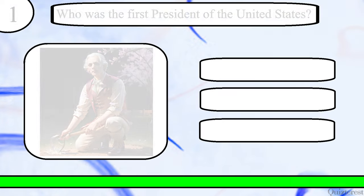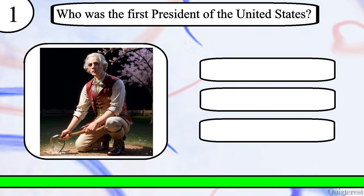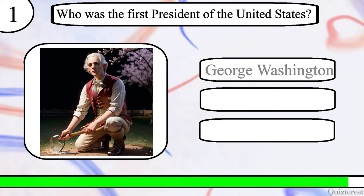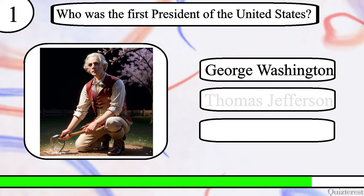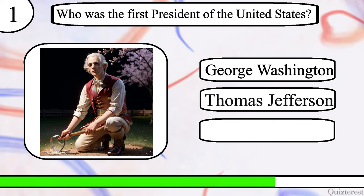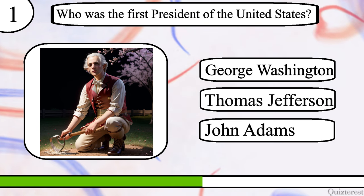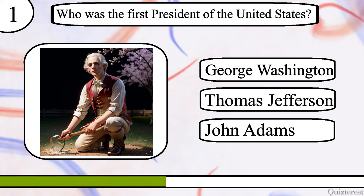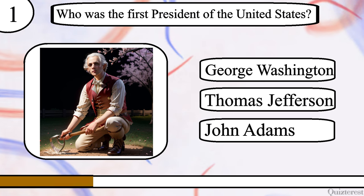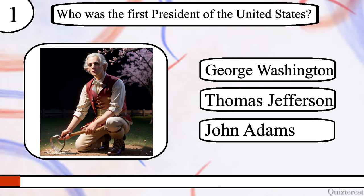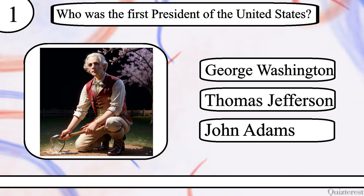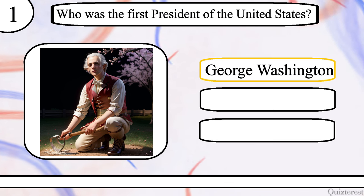Question 1. Who was the first President of the United States? George Washington, Thomas Jefferson or John Adams? The correct answer is George Washington.